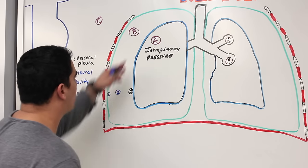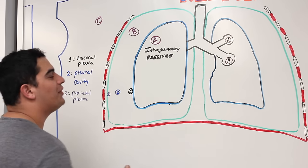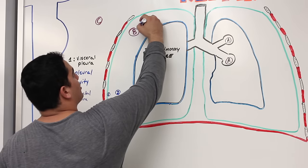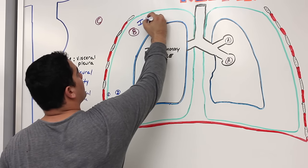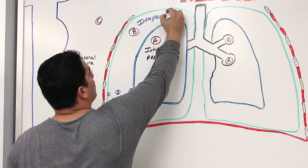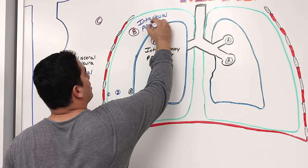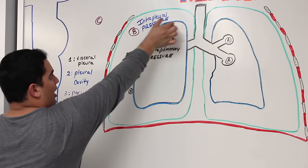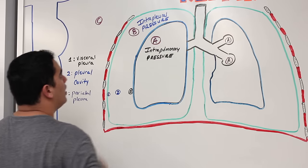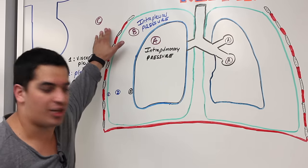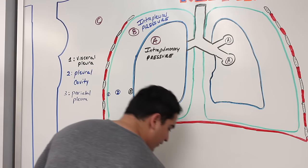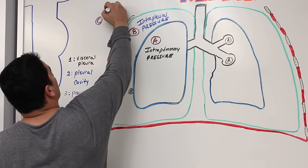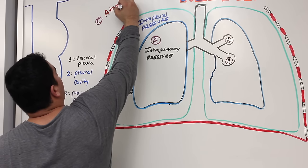Pressure B — the pressure in the pleural cavity — is called the intrapleural pressure. And pressure C is the atmospheric pressure, also called barometric pressure.